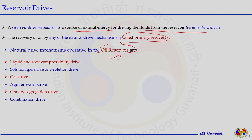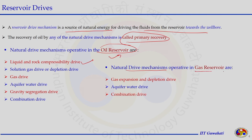For oil reservoirs — which primarily produce oil, though gas and water are also produced — the six drive mechanisms are: liquid and rock compressibility, solution gas drive or depletion drive, gas cap drive, water influx from an aquifer, gravity segregation of different fluids, and combination of some of these drives. For gas reservoirs, the mechanisms are gas expansion or depletion drive, water aquifer drive, and the combination of these two.